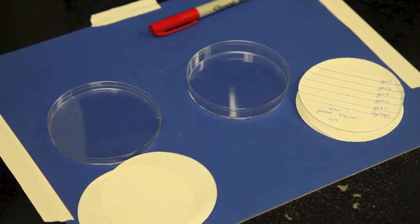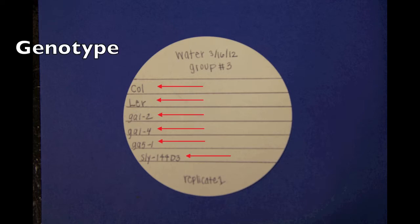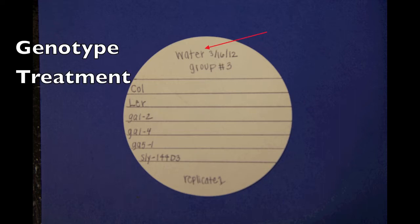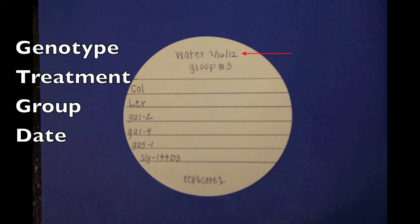Before you get started, you should label your filter paper. Though you should always follow your teacher's instructions, there's a few things you should probably include. For example, the genotype of the seeds you're using, here shown as wild type Columbia or GA1-2, the treatment you're subjecting your plates to, either water control or GA solution, your group number, and of course, the date.